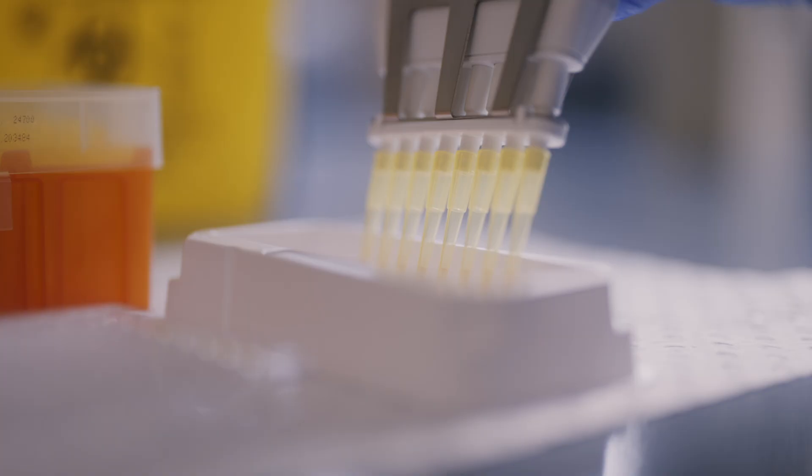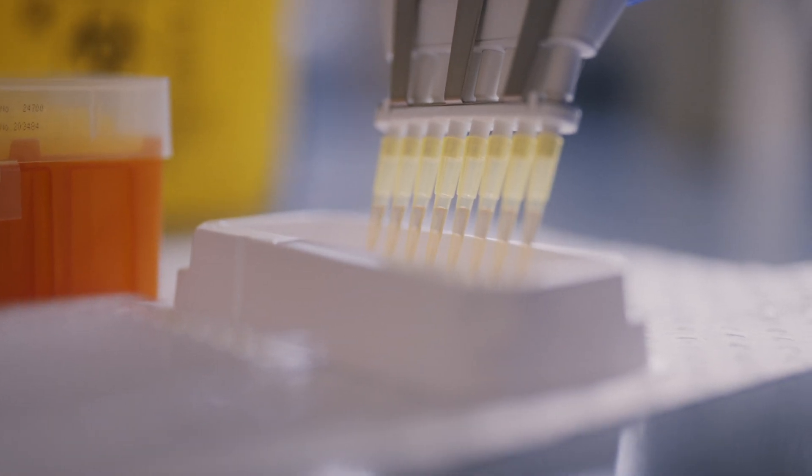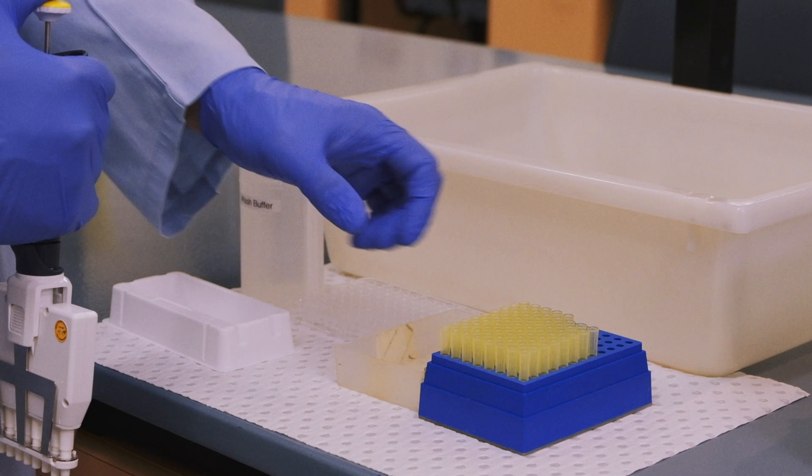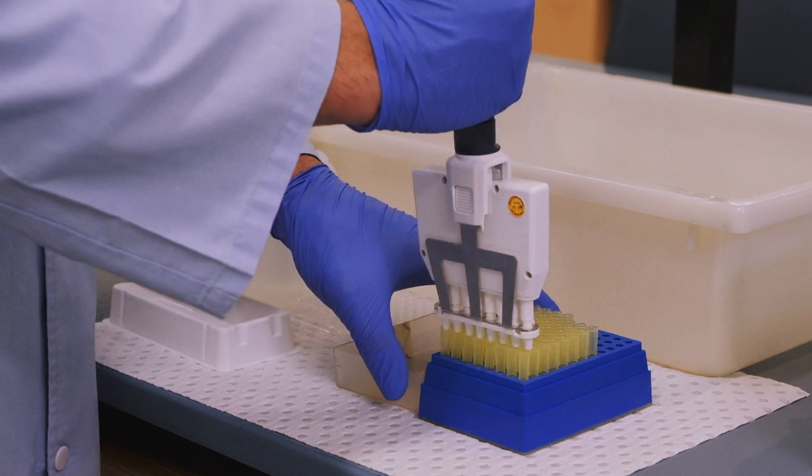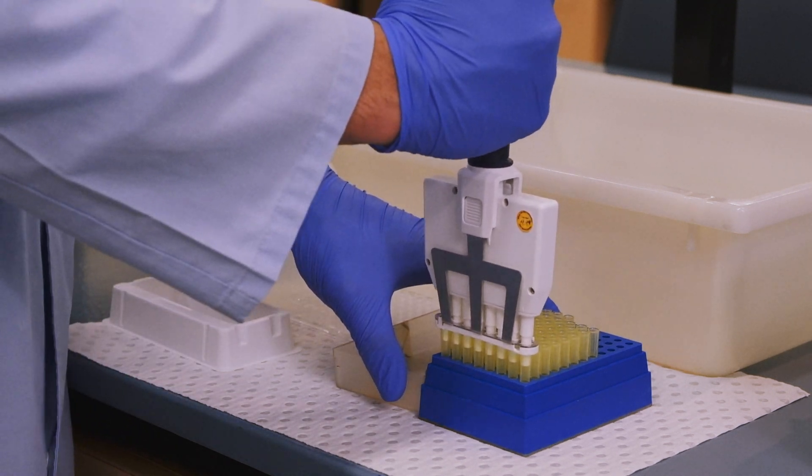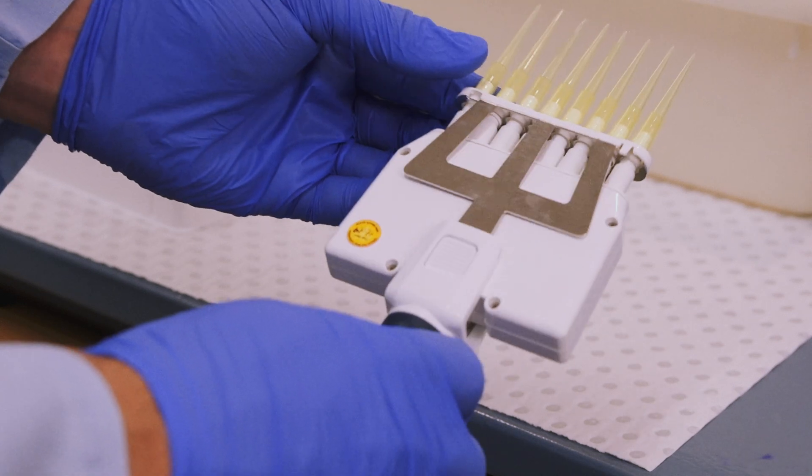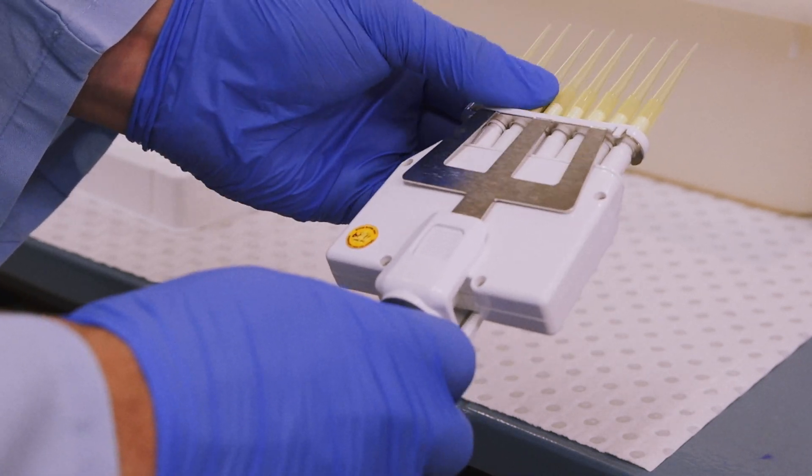Antigen already diluted in coating buffer is poured into the trough and added to a 96-well plate using a multi-channel pipette. When loading tips onto a multi-channel pipette, you should also manually secure each of the tips from the base because they can be loose and sometimes give inaccurate results across your wells.